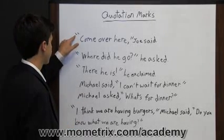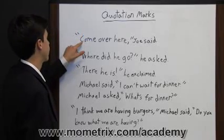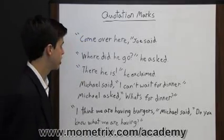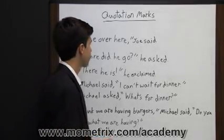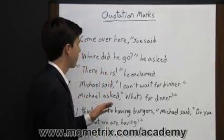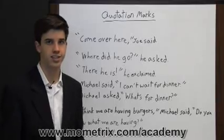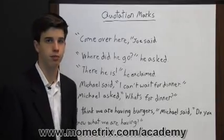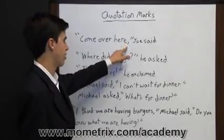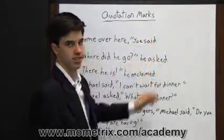First, you open up the sentence with quotation marks, then you capitalize the first letter of the first word inside the quotation marks. If you have a sentence that is declarative or imperative — any sentence that would end with a period if it was on its own — you end that sentence with a comma, then you have quotation marks, and then you say the rest of the sentence.